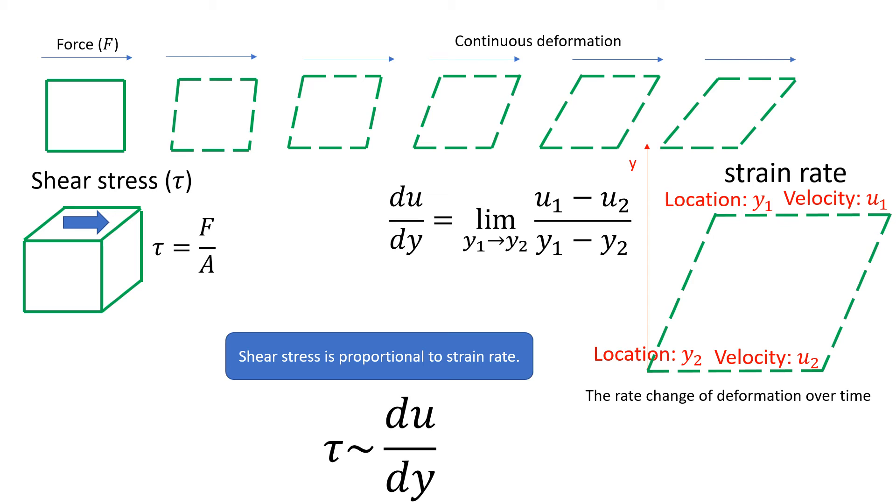Now we have the mathematical description of shear stress and also its response, strain rate. Experimentally, it is discovered that there's a linear relationship between shear stress and strain rate. Actually, to be more general, the linear relationship between stimulus and response is generally valid for many physical phenomena, especially when the stimulus is very small.